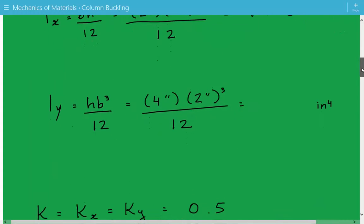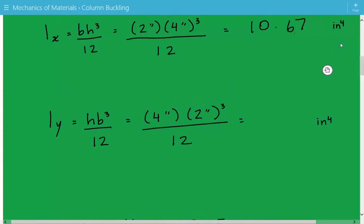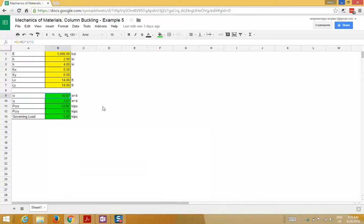The moment of inertia about the y axis is equal to hb³ over 12, and that's equal to 2.67 inches to the fourth power.